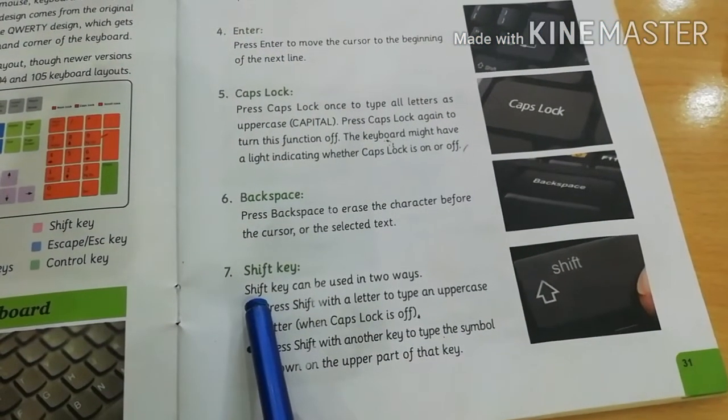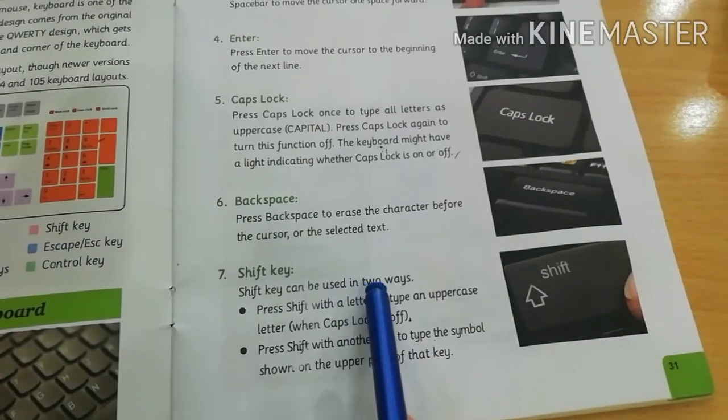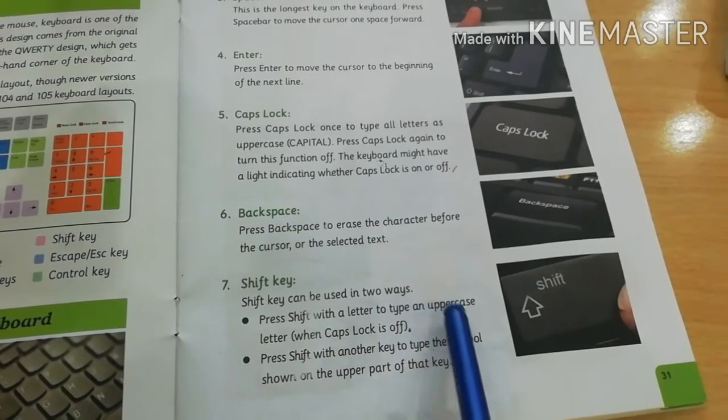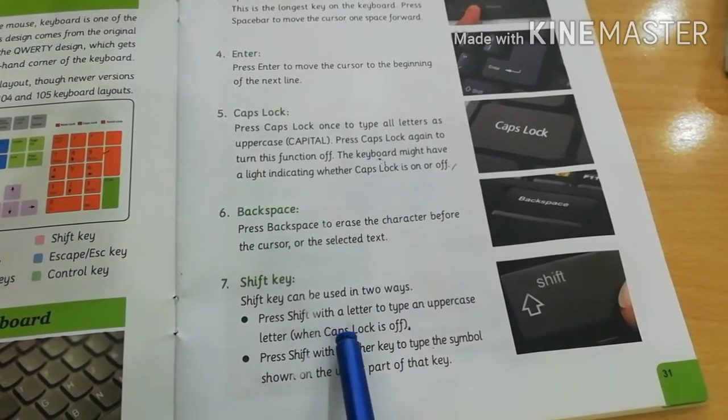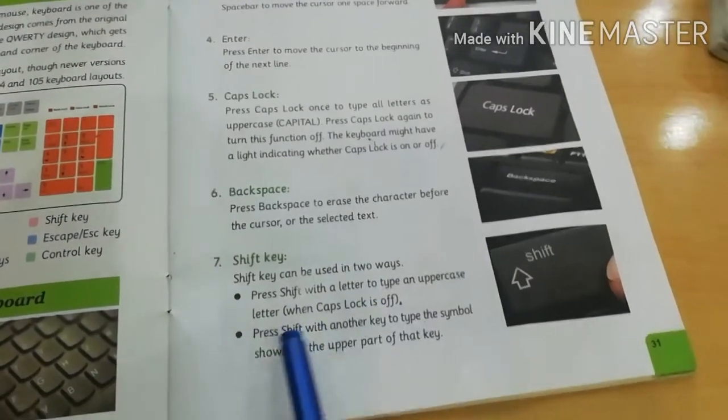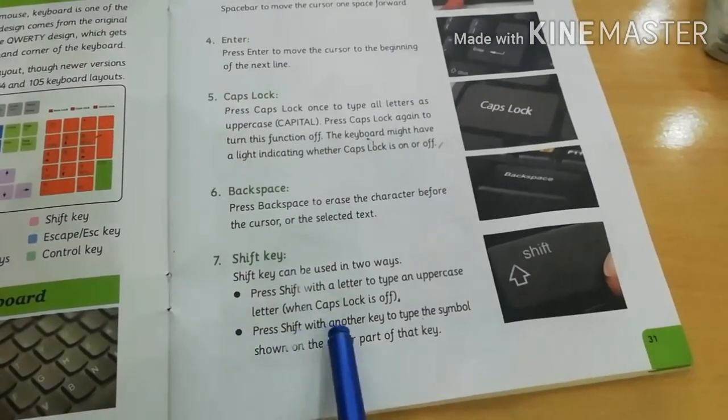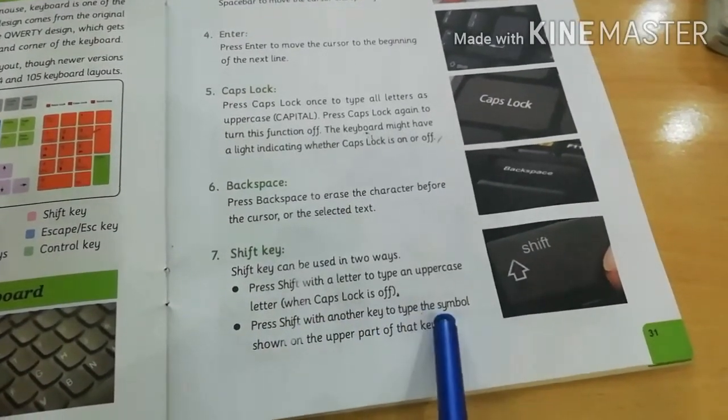Shift key can be used in two ways. Press shift with a letter to type an uppercase letter when caps lock is off, and the second way is press shift with another key to type the symbol shown on the upper part of that key.